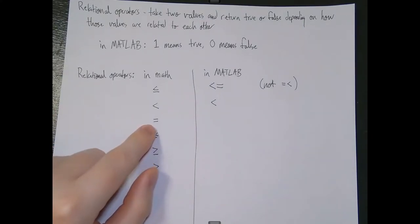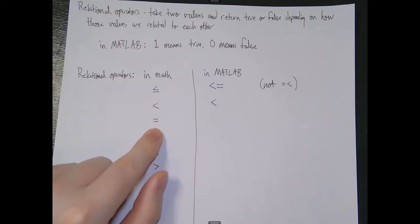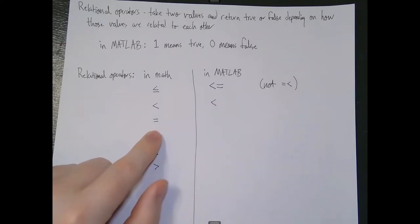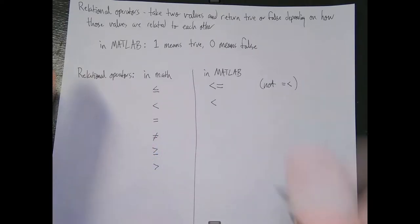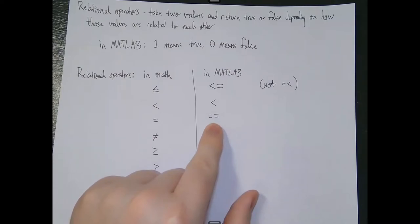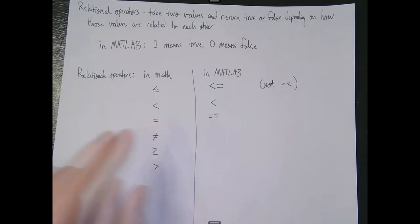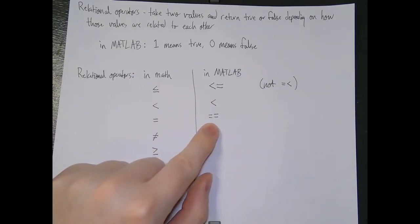For equals, since we use the equal sign for variable assignment — like x equals 35 — if we just reused that symbol in MATLAB, it would think we're trying to assign a variable when we're actually just trying to check if two values are equal. So the people who created MATLAB decided that equals equals (==) is how we check if two values are equivalent. X == y checks if x and y have the same value, whereas x = y sets x's value to y's value. This is really important to remember — whenever you're comparing x and y, use two equals signs.